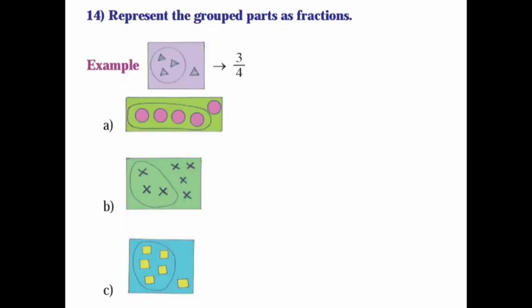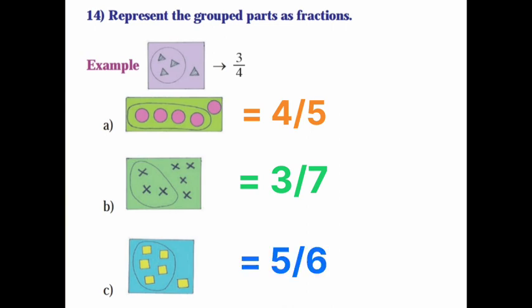14th main. Represent the grouped parts as fractions. Example, out of 4, 3 are circled. So 3 by 4. A, out of 5 circles, 4 are marked. So 4 by 5. B, out of 7, 3 are circled. So 3 by 7. C, out of 6, 5 is circled. So 5 by 6. You should count and write like this.